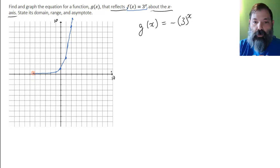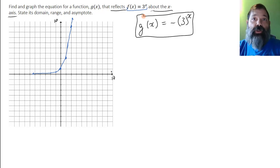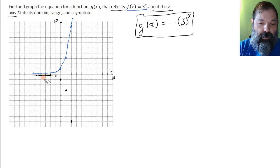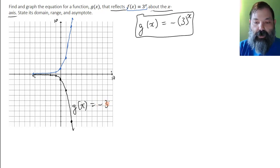But we want the reflection. So g(x), the reflection about the x-axis, well, we would just change the signs of each of those points. So I'd have the point (-2, -1/9), (-1, -1/3), (0, -1), (1, -3), and (2, -9). And again, I'll sketch the function roughly. And so there is the function, g(x) equals the opposite of 3^x.